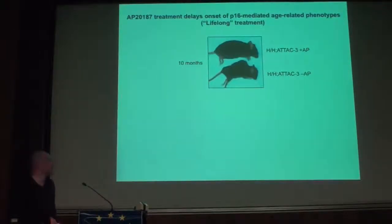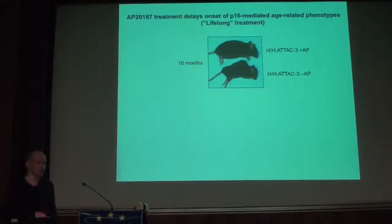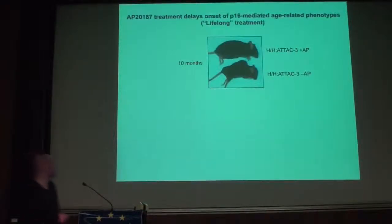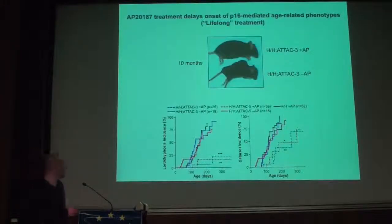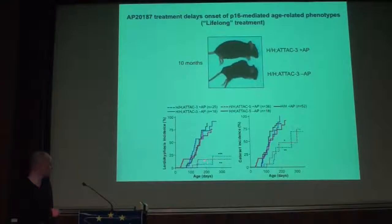We then conducted our actual study, treating animals from three weeks of age — at weaning — until they reached ten months of age, at which point animals were sacrificed. Hypomorphic animals that were treated looked relatively healthier than untreated animals. The onset of lordokyphosis — the curvature of the back — is severely delayed in transgenic animals that received the drug, compared to untreated animals.